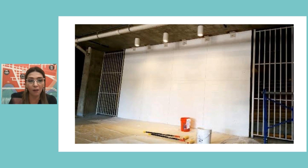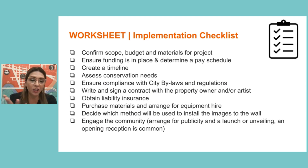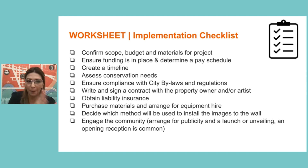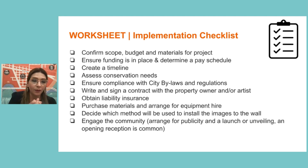This is an example of that cinder block wall — primed and gridded already. I like to bring my checklist; I have checklists for everything. Before moving on to painting, confirm your scope, budget, and materials. Ensure that funding is in place and determine your pay schedule. Create a timeline, assess conservation needs, make sure you have all permits and follow all regulations. Confirm the signed contract from the wall and property owner, have your liability insurance, purchase materials, arrange for equipment hire, and decide which method you'll use to put the images on the wall.